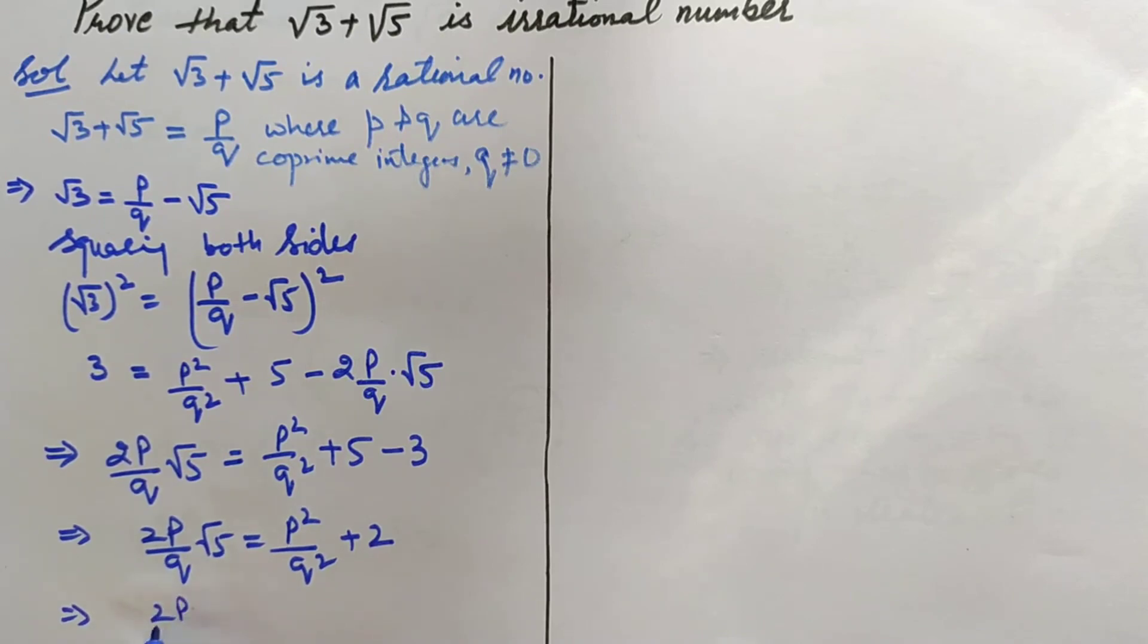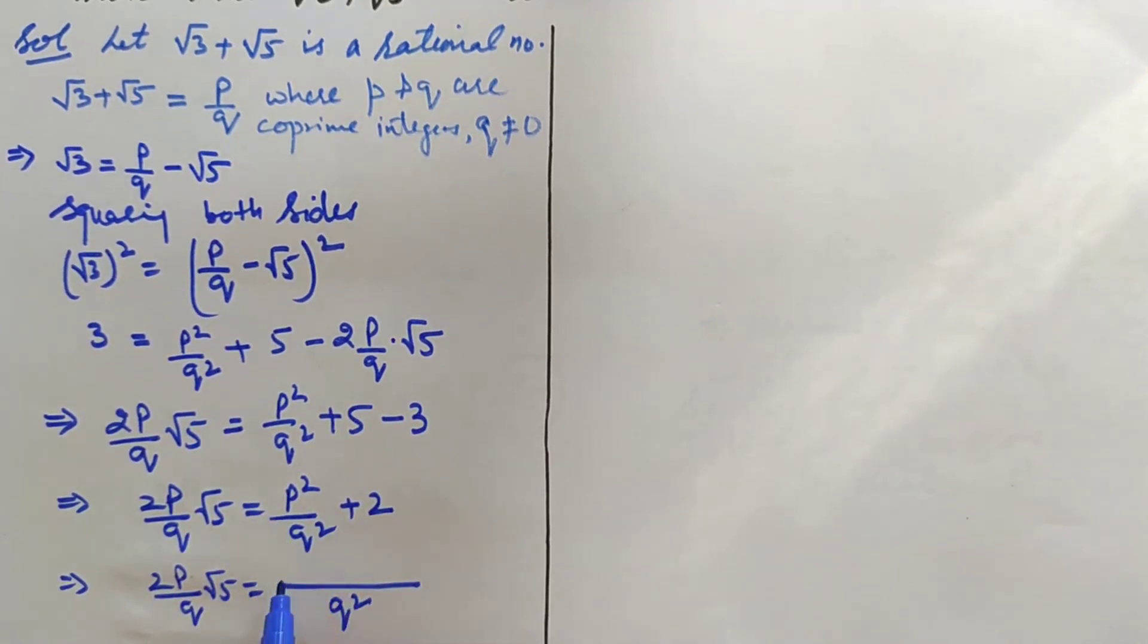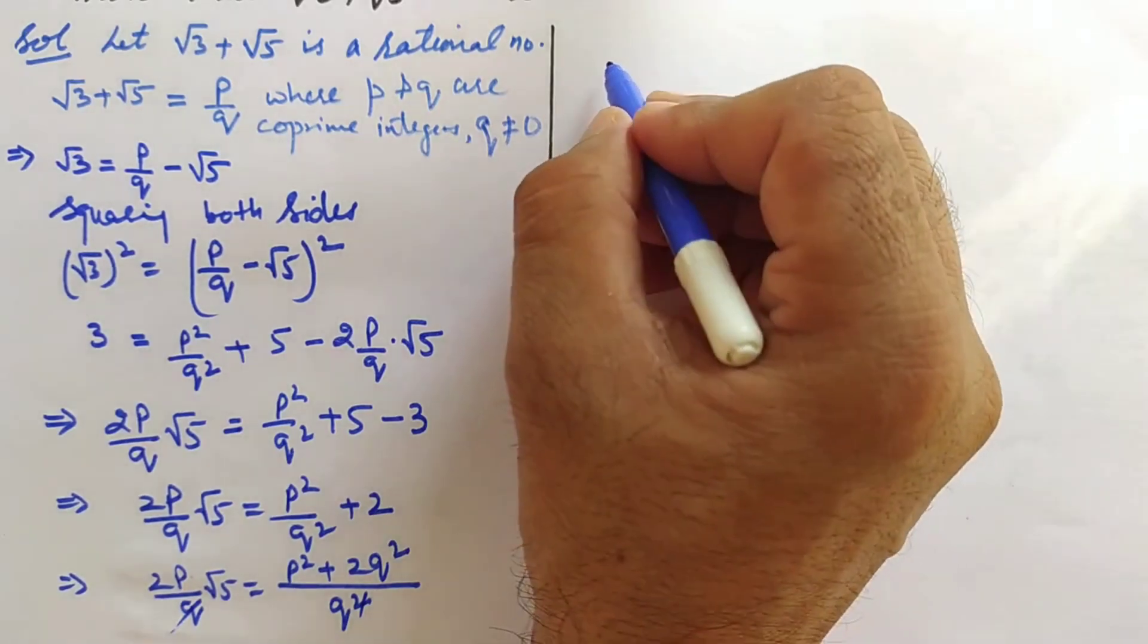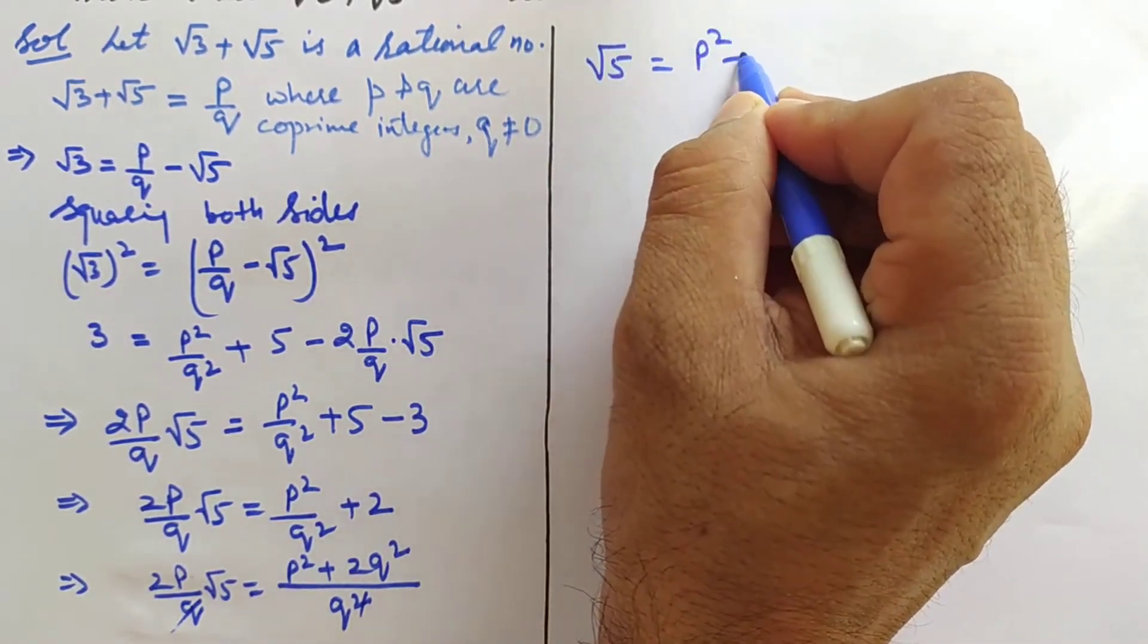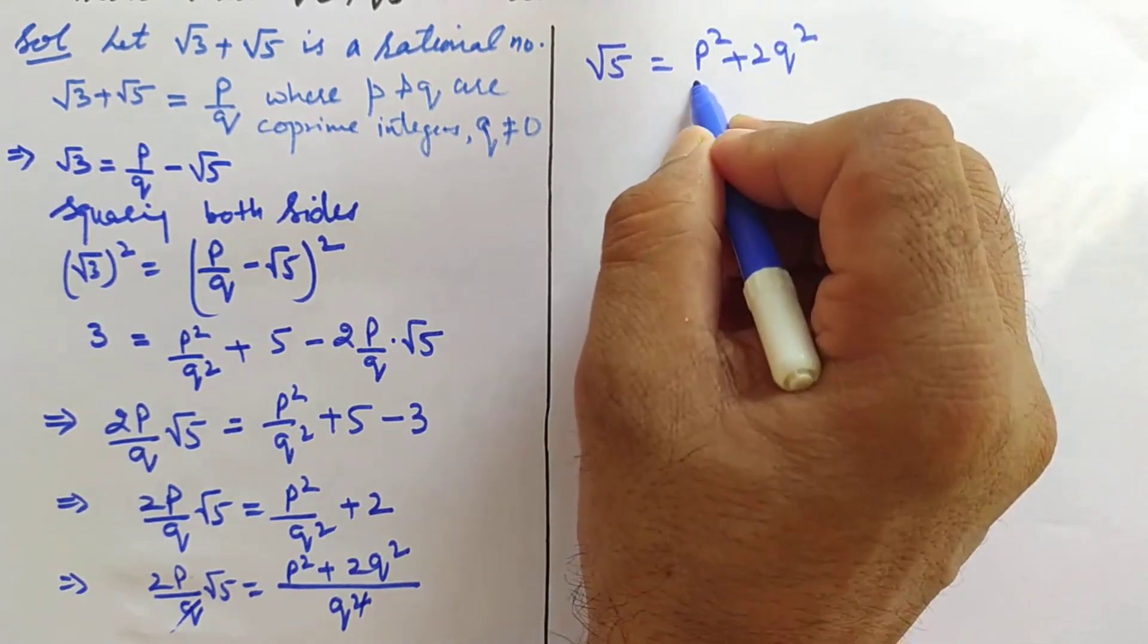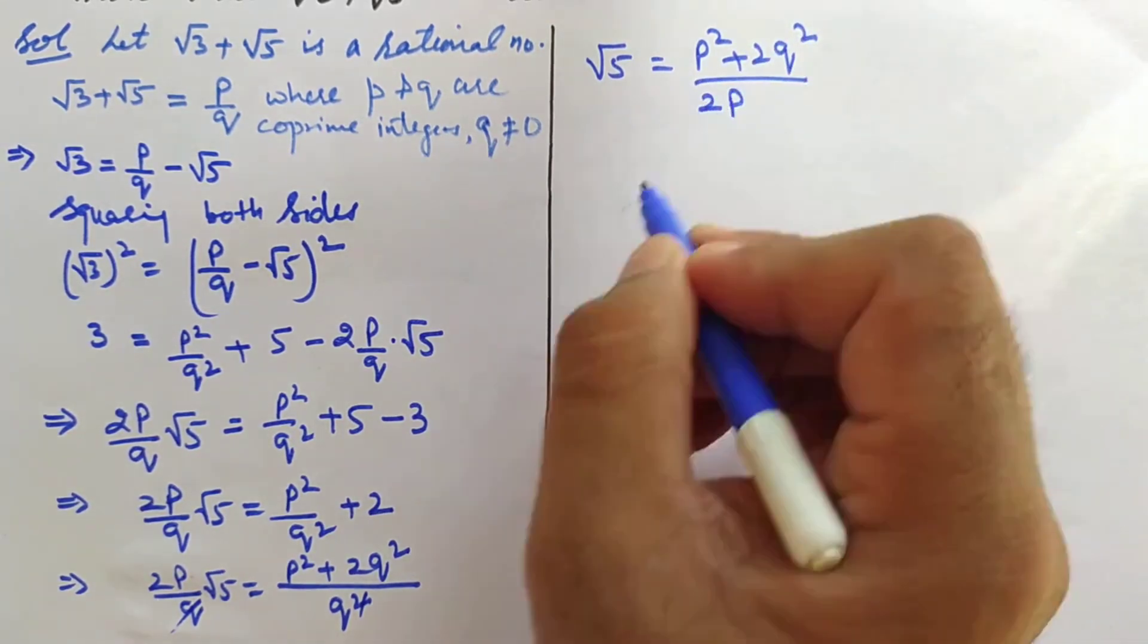So 2(p/q)√5 = p²/q² + 2. Now you can take LCM on the right-hand side. So it will be 2(p/q)√5 = (p² + 2q²)/q². Now √5 = (p² + 2q²)/(2pq).